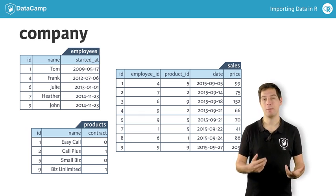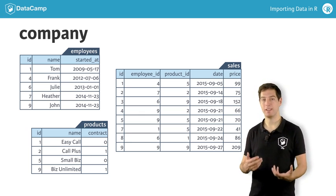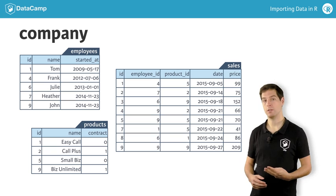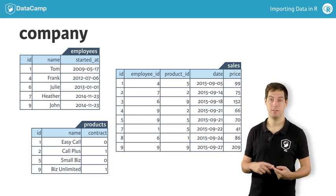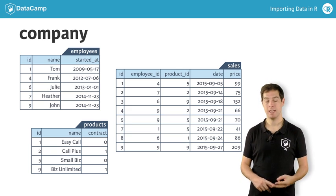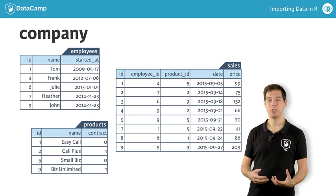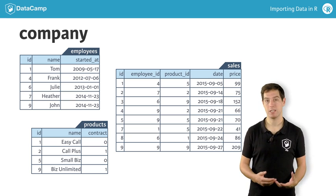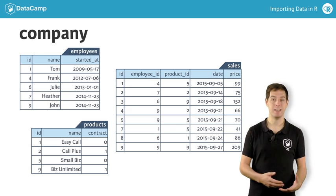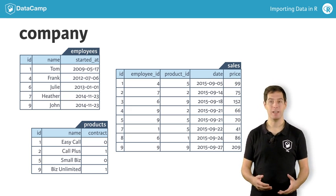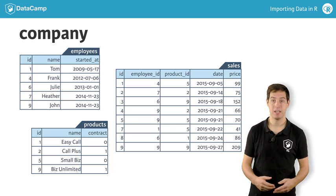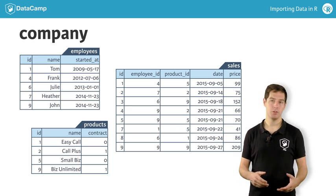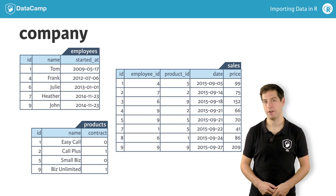Like a flat file, information is displayed in a table format. The Employees table has five records and three fields, namely ID, Name, and Started At. The ID here serves as a unique key for each row or record. Next, the Products table contains the details on four products. We're dealing with data from a telecom company that's selling both with and without a contract. Each product also has an identifier.